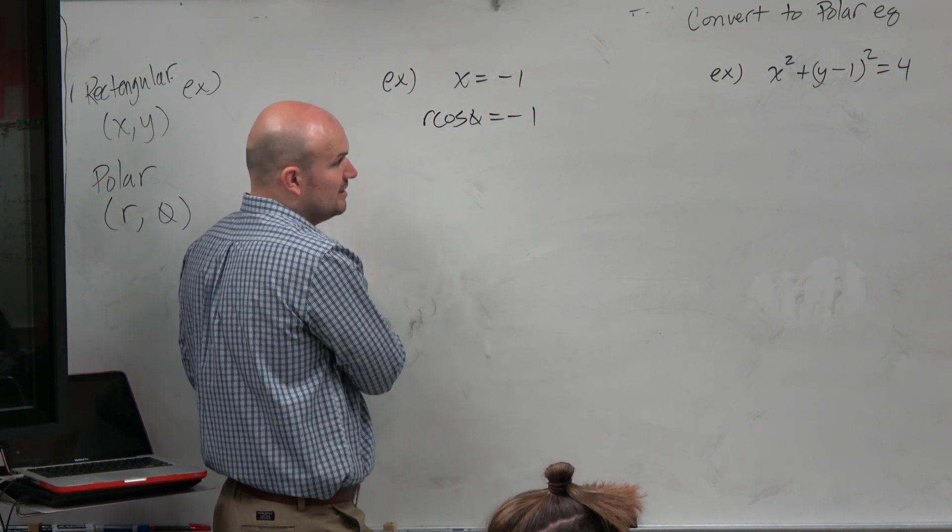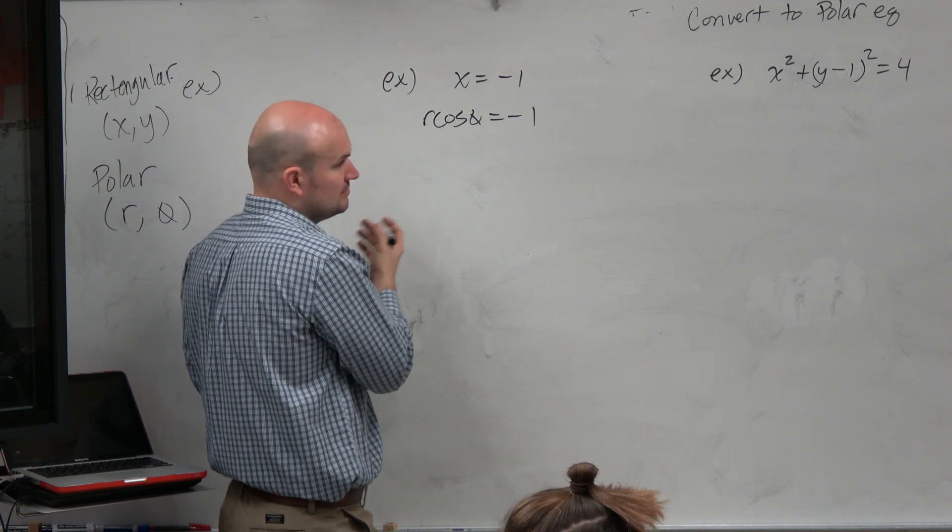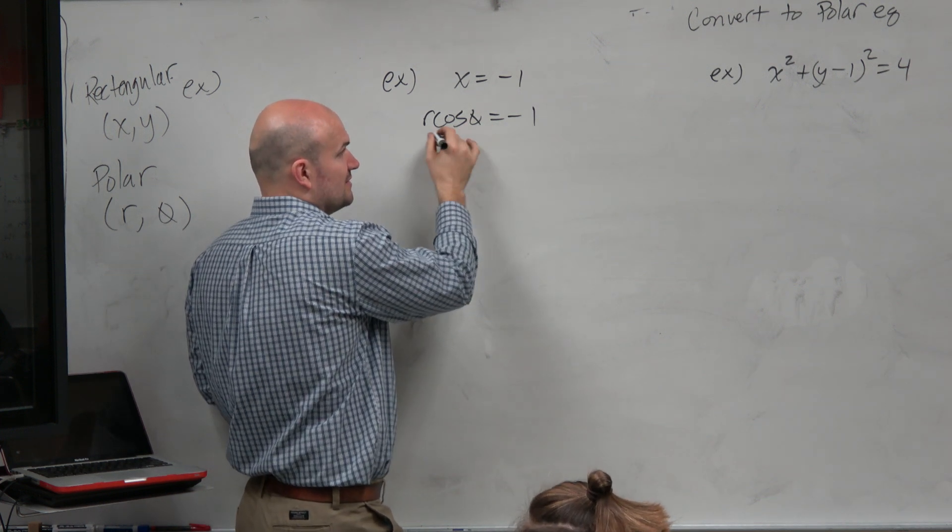Now, if we want to simplify this to have this as solved for r, then we'd want to divide by cosine of theta on both sides.